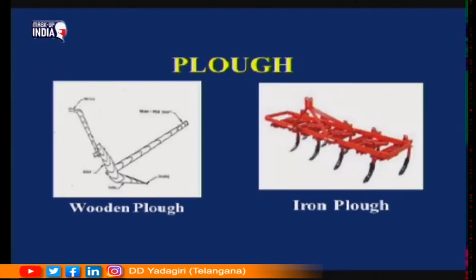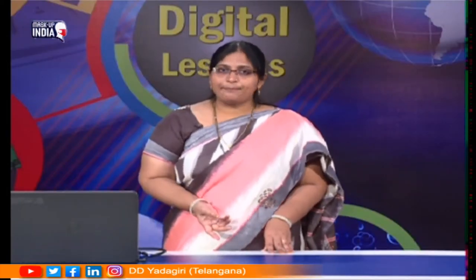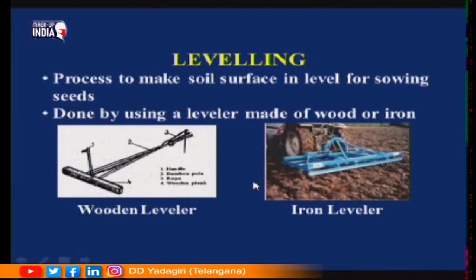The plough is made of wood or iron. You can see in the pictures: this is a wooden plough, completely made of wood, with only a pointed tip made of iron. Preparation of soil includes two stages — the first is ploughing and the second is levelling. Let us see what levelling means.